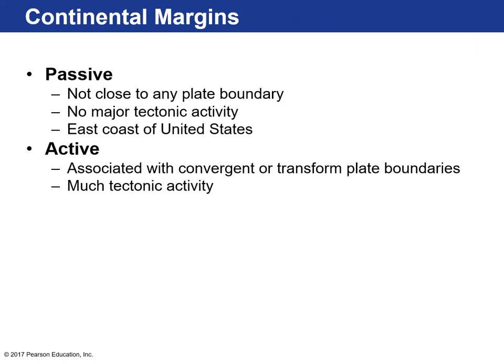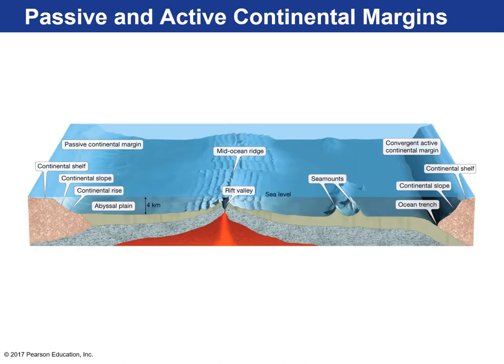We call that a passive margin, and the reason it's passive is because it's not close to any plate boundary — there's no major tectonic activity. The entire East Coast is on a passive margin. Living in Florida, we don't really experience many earthquakes or tectonic activity. Other continental margins can have a lot of tectonic activity — we refer to those as active continental margins, and they're associated with convergent or transform plate boundaries.